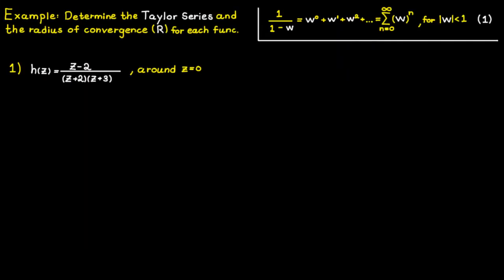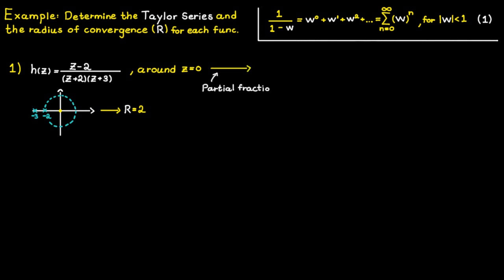In our last example we discuss what to do if you are not able to rewrite your function as a geometric series, or make a connection to another function with a known power series. This function has two singularities: one at minus two and one at minus three. Therefore the radius of convergence is going to be two, since that is the closest singularity. To solve this problem we have to rewrite it with the help of a partial fraction expansion. Then we can determine the Taylor series for each term and add them together to get the final answer.